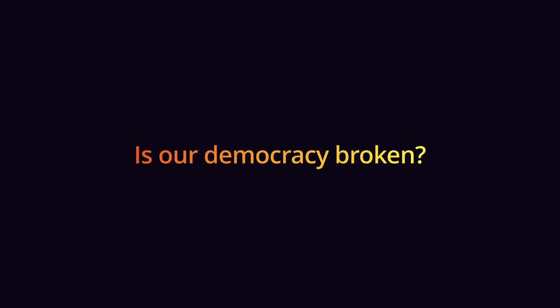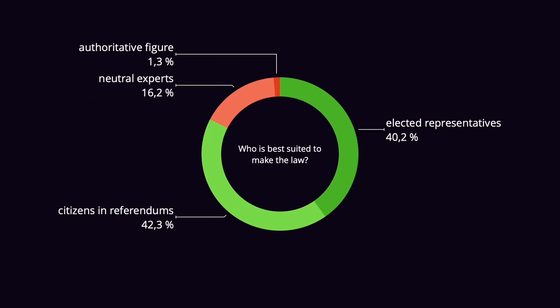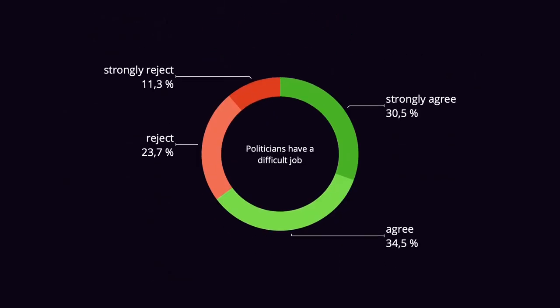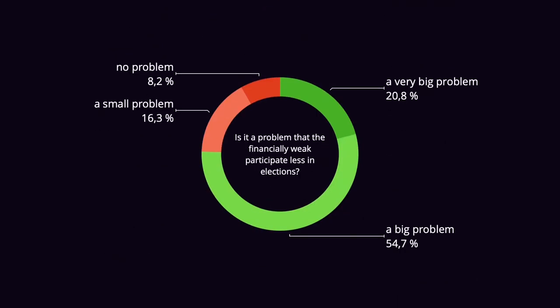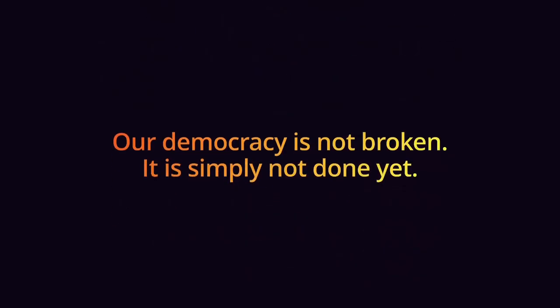Is our democracy broken? Looking at other results of the same study: only 1.3% want an authoritative figure with extensive powers to make the law — with the rise of the extreme right, this is a good thing. While 88% think politicians make more promises than they can keep, the majority acknowledges politicians have a difficult job. A great majority identified a lack of participation in elections as the biggest problem. Our democracy generally fails to make everyone happy, but democracy is not broken — it is just our implementation that is experiencing technical difficulties.